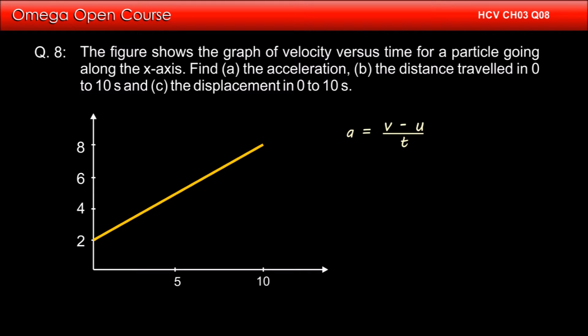Acceleration is given by change in velocity divided by time. As the final velocity is 8 meters per second and the initial velocity is 2 meters per second, the change in velocity is 6 meters per second.